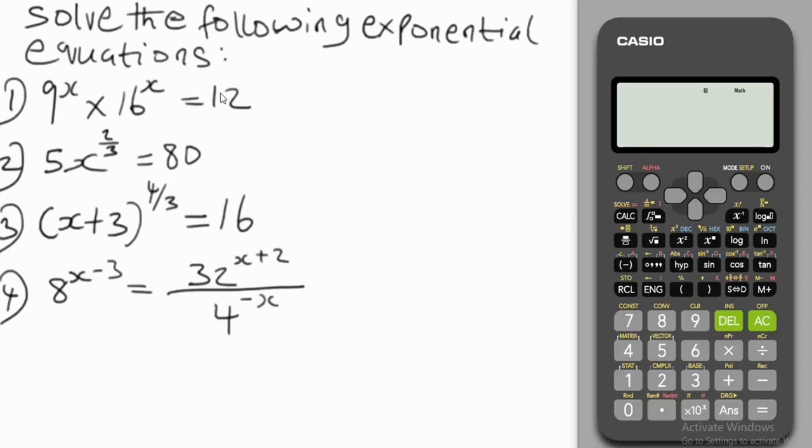Let's begin with question one. So we have this exponential equation: 9 to the power of x times 16 to the power of x equals 12. So we are looking for the value of x.